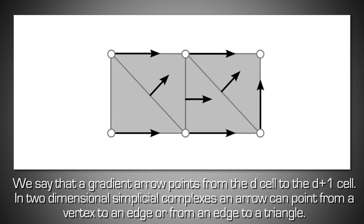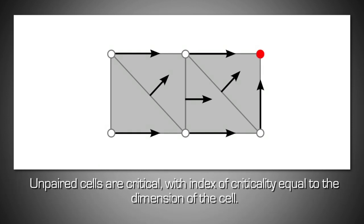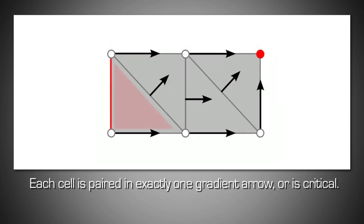In two-dimensional simplicial complexes, an arrow can point from a vertex to an edge or from an edge to a triangle. Unpaired cells are critical with an index of criticality equal to the dimension of the cell. Each cell is paired in exactly one gradient arrow or is critical.